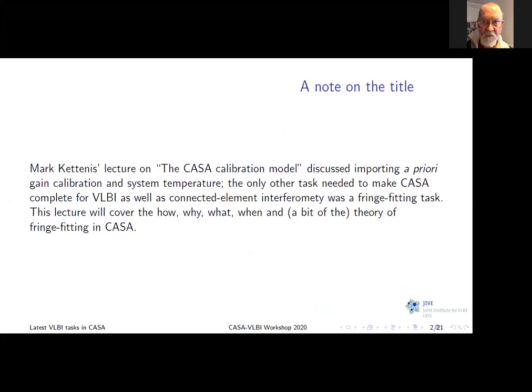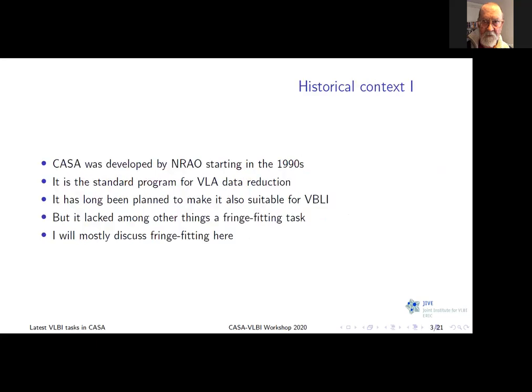In practice, once you've handled the VLBI-specific way of dealing with gain, amplitude calibration, and system temperature, the only thing really missing from CASA to do VLBI was fringe fitting. Benito discussed fringe fitting at some length. I'm going to focus on fringe fitting from the point of view of why it's necessary and how you do it, as well as a little bit of history. CASA was developed by NRAO starting in the 1990s, used for the VLA and adopted by ALMA, always planned as a generic package for radio interferometric data reduction. But for a long time the implementation didn't have a fringe fitting task, and that's essentially the only thing that was really missing.